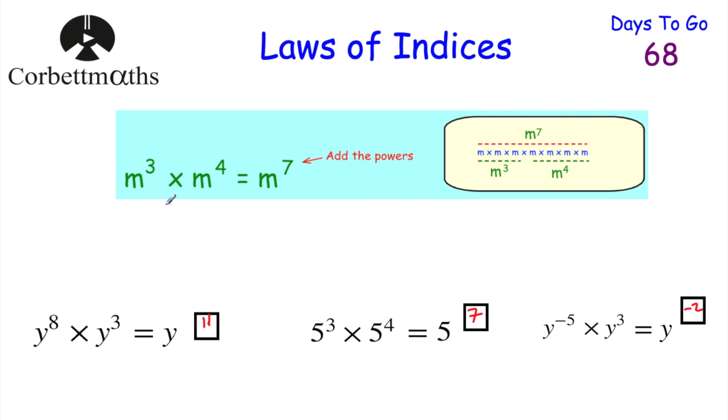So if you're multiplying things with the same base, you can add the powers. If you got Y to the power of 11, 5 to the power of 7, and Y to the power of negative 2 — well done.